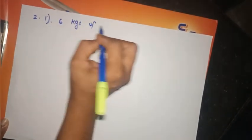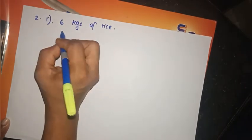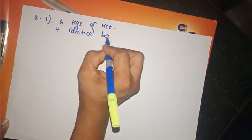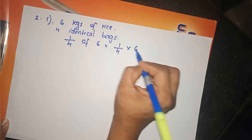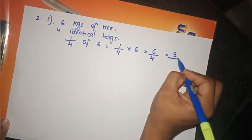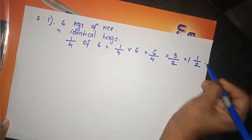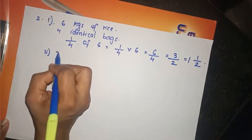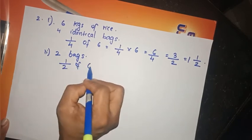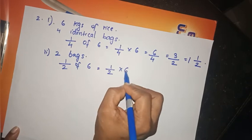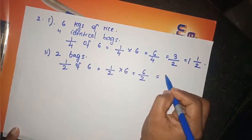In one bag: 1/4 into 6 equals 6/4, which simplifies to 3/2. For 2 bags: 1/2 of 6, so 1/2 into 6 equals 6/2. 2 ones are 2, 3 ones are 3 liters. Similarly for the rice problem.